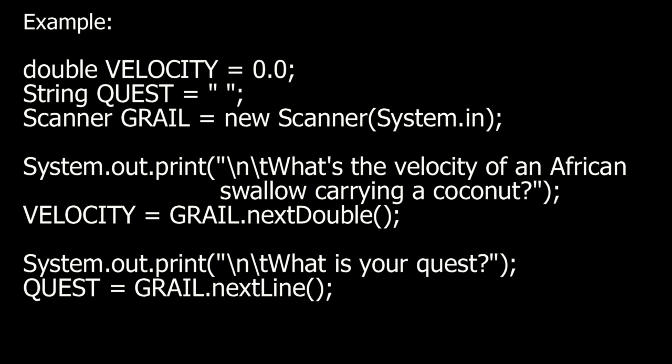Example. Suppose we want to ask two questions. We have a double, a string, and a scanner object. Our first question is, What is the velocity of an African swallow carrying a coconut? We want to store that in our double, so we use our scanner object, Grail, and call the function NextDouble.